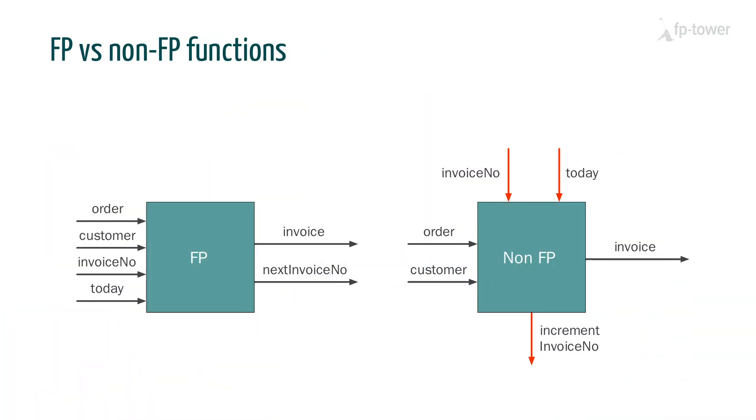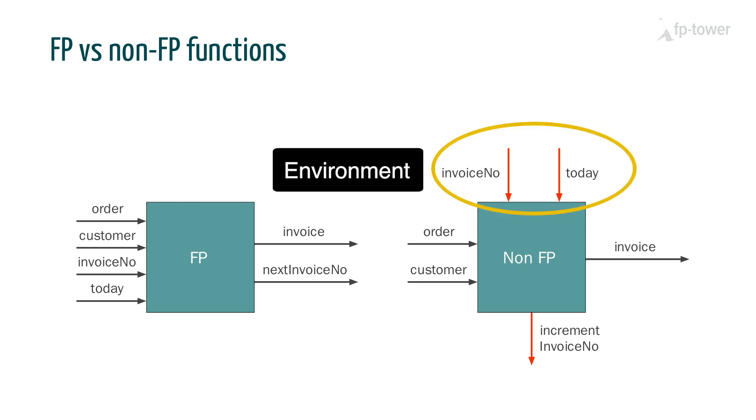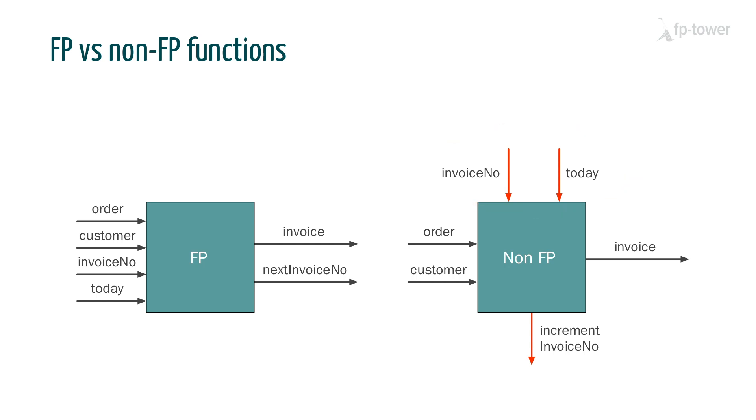In summary, today we explored the difference between an FP and a non-FP function. Essentially, FP functions impose two restrictions. One: we can't fetch data from the environment. Instead, we need to pass all the dependencies as arguments of the function. Two: we can't perform any actions. Instead, we need to describe all the effects made by the function in the output values.